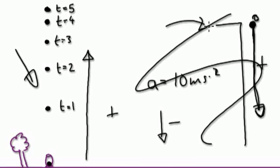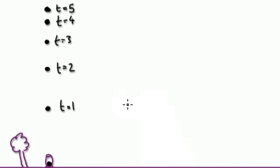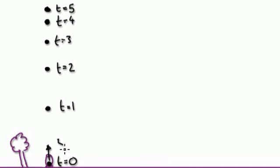Whereas in the scenario of dropping a cannonball off a building, direction is not important — we only cared about the length going downhill. But now, direction matters. We're going to fire this cannonball up at 50 meters per second. When t equals zero, it's at ground level.